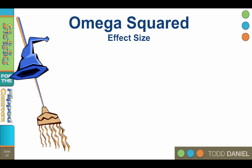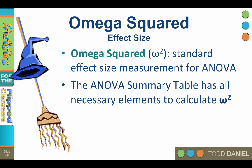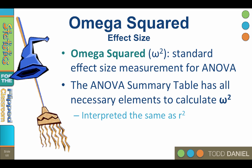There is one more measure of effect size you may encounter with an ANOVA: omega squared. Omega squared is the standard effect size measurement for an ANOVA, and it can be calculated from the data available in the ANOVA summary table. It is also interpreted the same way as R squared. However, omega squared is an unbiased measure of effect size, and as such, it will always be smaller than partial eta squared, which will always be smaller than eta squared.